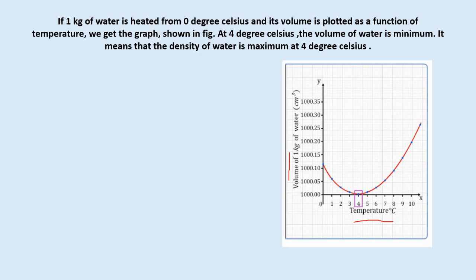From 0 degrees Celsius, we have seen that water will contract and due to this contraction the volume will go on decreasing — decreasing till 4 degrees Celsius. Here we can see the curve: the volume decreases due to the contraction. After 4 degrees Celsius, the volume again increases due to expansion — the normal expansion takes place. So between 0 to 4 degrees Celsius the volume decreases, and this is the anomalous behavior of water.